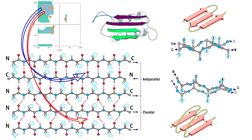If the beta strands run in the same direction, they are called parallel beta strands. If they run in opposite directions, they are called anti-parallel beta strands. Remember that both parallel and anti-parallel beta sheets are found in biological proteins. Generally, parallel beta sheets exhibit a phi angle of minus 119 degrees and a psi angle of about 135 degrees.